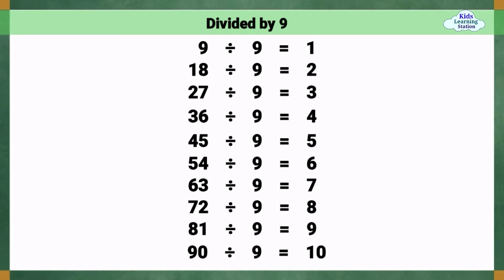Divided by 9. 9 divided by 9 equals 1. 18 divided by 9 equals 2. 27 divided by 9 equals 3. 36 divided by 9 equals 4. 45 divided by 9 equals 5.